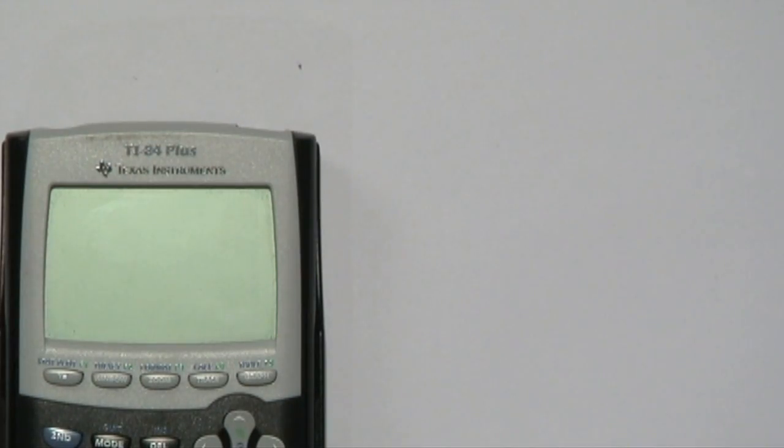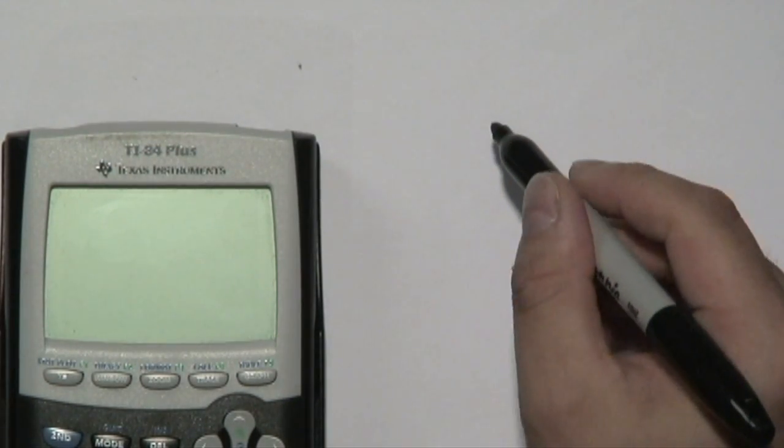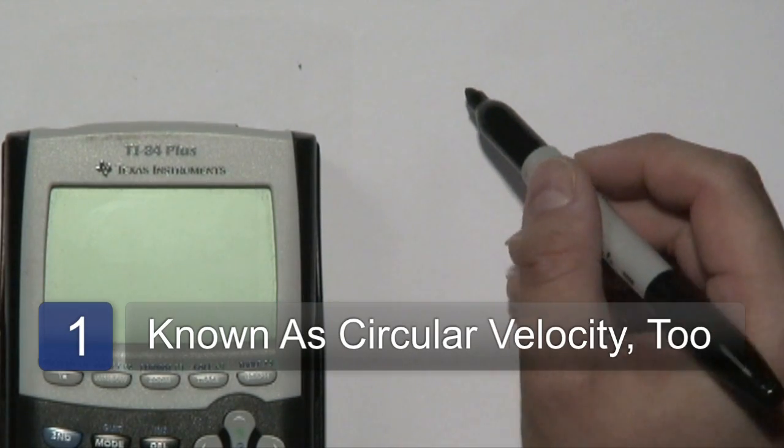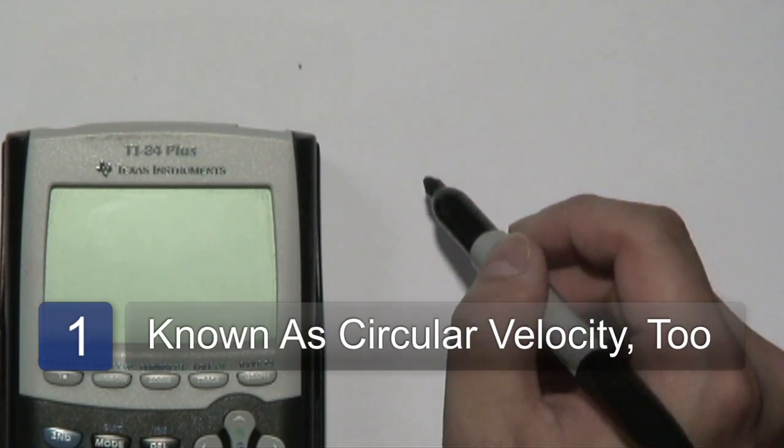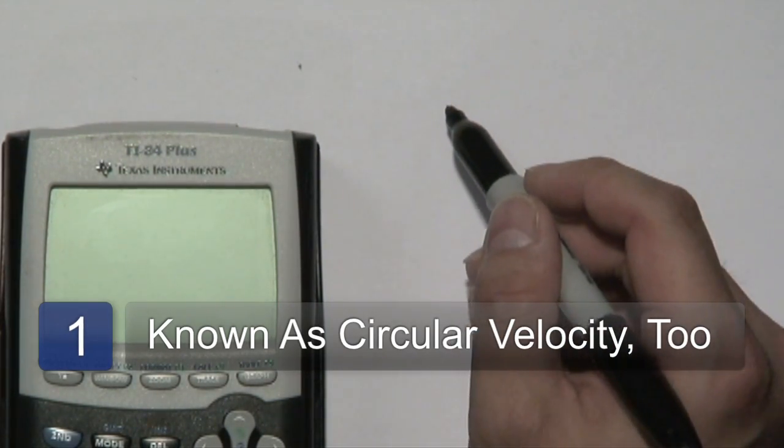So here we go. We're going to talk about the formula and what's involved in each particular variable. Now let's talk about the definition of orbital velocity. It's also known as circular velocity, and it's the speed of a satellite in orbit around a planet.